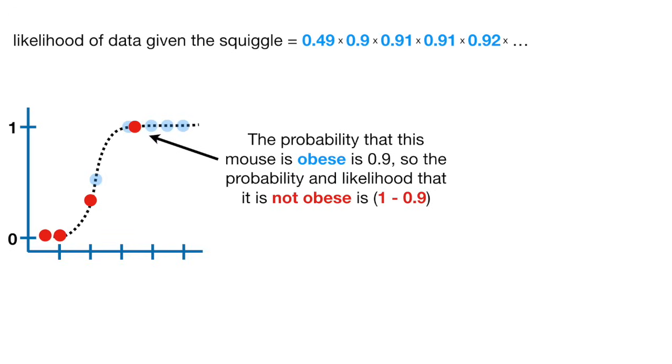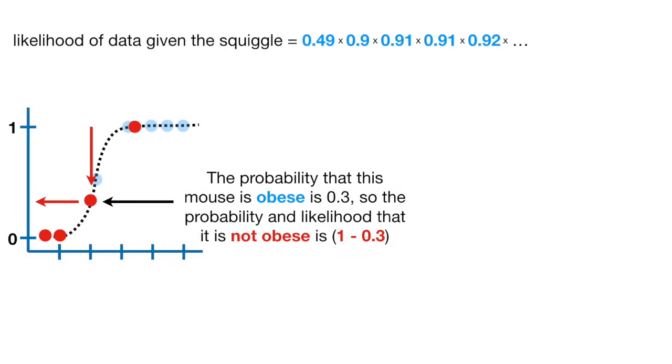The probability that this mouse is obese is 0.9, so the probability and likelihood that it is not obese is (1 - 0.9). The probability that this mouse is obese is 0.3, so the probability and likelihood that it is not obese is (1 - 0.3).